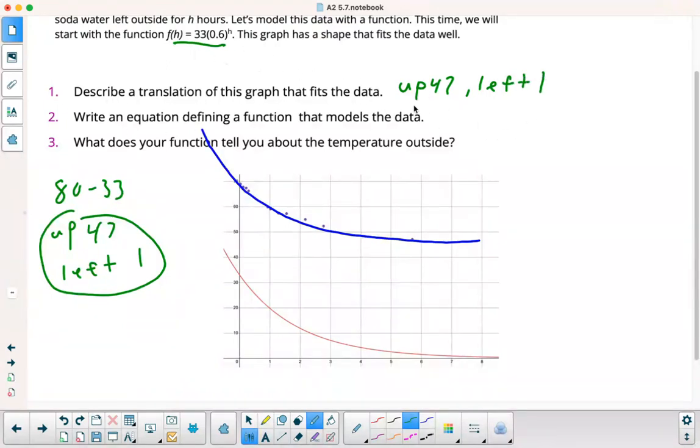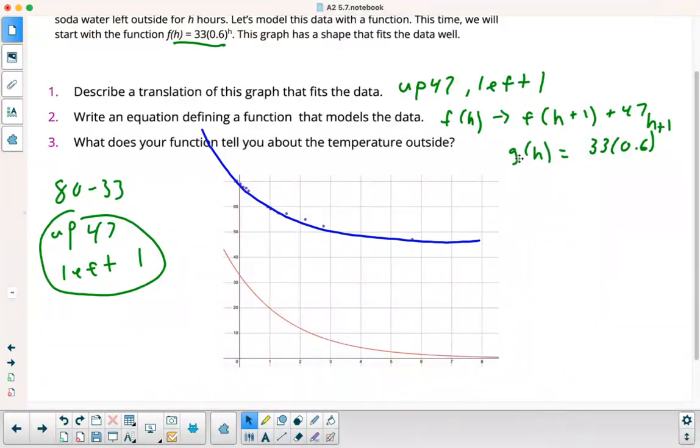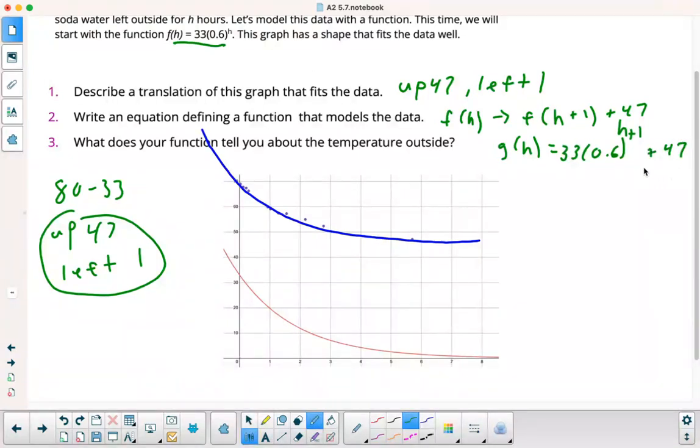Write an equation here. You're going to have to take your original function, f of h, and that's going to go to f of h plus 1 plus 47. So I'll call it g of h. I'm going to replace my h with h plus 1. And then if I want to go up 47, I just add 47 on there. That would be for number 2.